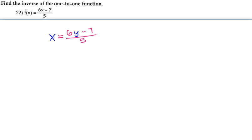Now we're going to solve for y. I'm going to multiply both sides by 5, giving us 5x equals 6y minus 7.